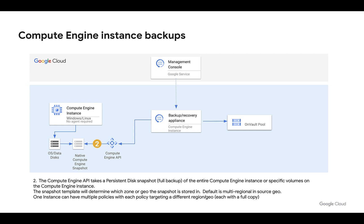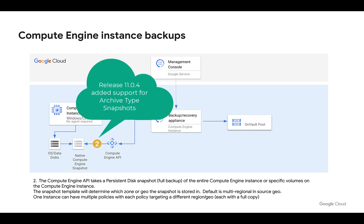This could be multi-region, or it could be single region, or it could even be multiple regions if we create multiple snapshot policies that each specify a different region. Also be aware that from release 11.04 we support archive type as well as standard type for persistent disk snapshots.